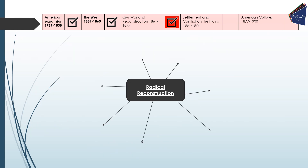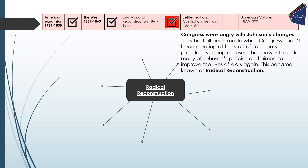Following President Johnson's negative policies, we see a phase of Radical Reconstruction where things improved dramatically. Congress was very angry with Johnson's changes — which had all been made while Congress wasn't meeting at the start of his presidency. Congress used their power to undo many of Johnson's policies and aimed to improve the lives of African-Americans again. This became known as Radical Reconstruction — radical because it was going against the grain of the embedded racism and discrimination that had existed up until this point.